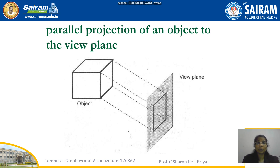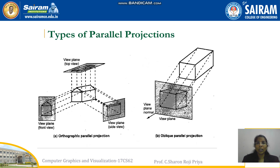So the main difference between perspective and parallel projection is: in perspective projection, the distance between camera and the object is finite, whereas in parallel projection, the distance between the camera and the object is infinite. Next, we can see the types of parallel projection.